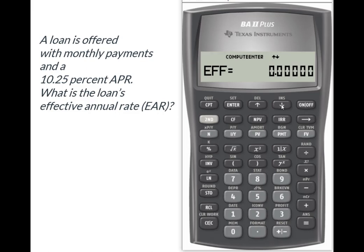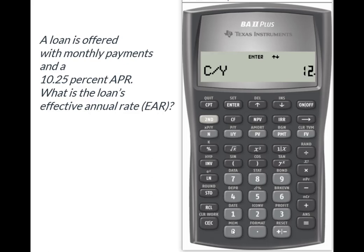EFF is the effective rate — that's the EAR we're solving for — so we're going to go past that for now. What it wants to know next is how many compounding periods I have per year. This was expressed as an annual percentage rate, so I enter 12. It may actually default to 12, but if not, just hit 12 and enter.